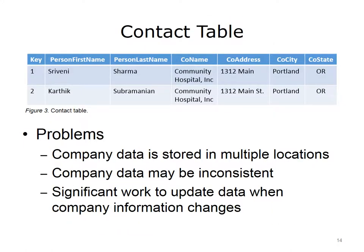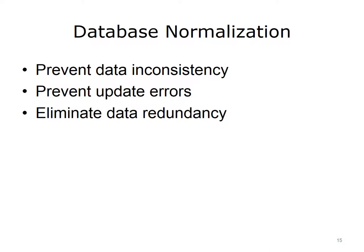This slide shows an example of a contact table with some entries. The attributes of the table are the columns, and each entry in the table is a row. However, the company data is stored in multiple locations, and as a result it is easy for the company data to be entered inconsistently. Additionally, if the general information about the company changes — such as a relocation to a new address or a name change — the entries in all the rows will need to be changed. To address these issues, the database can be normalized. Normalization is a process that helps ensure the database design is optimized and the data is consistent, by reducing the possibility of update errors and reducing data redundancy.